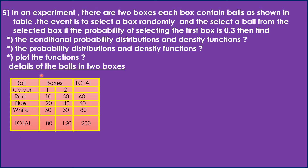Plot the functions based on the given values. The table details: ball colors are red, blue, and white. Box 1 has 10 red, 20 blue, and 50 white balls. Box 2 has 15 red, 40 blue, and 50 white balls. The total for Box 1 is 80 balls and the overall total is 200 balls. Find the conditional probability distribution and density functions and plot them.